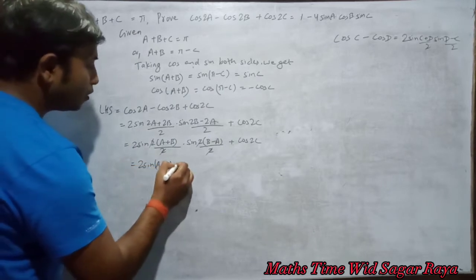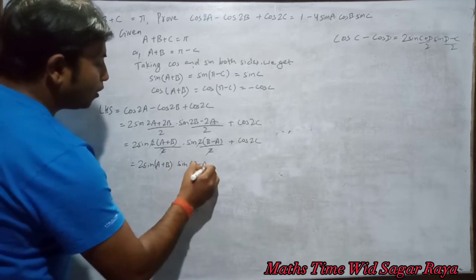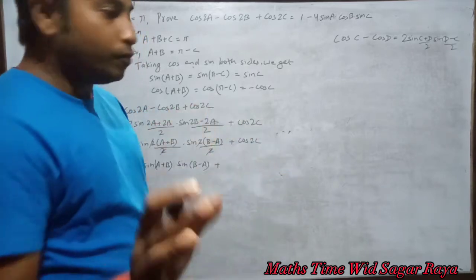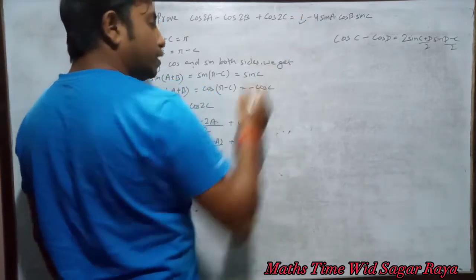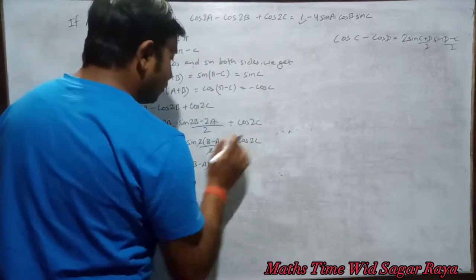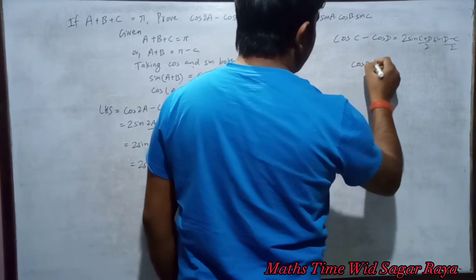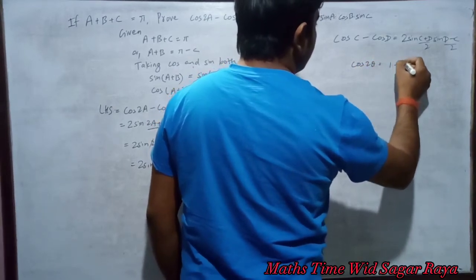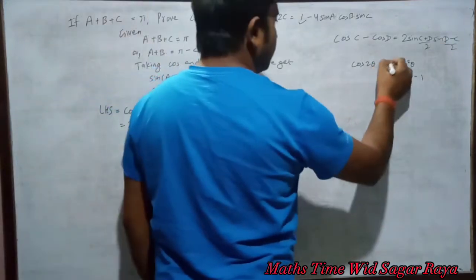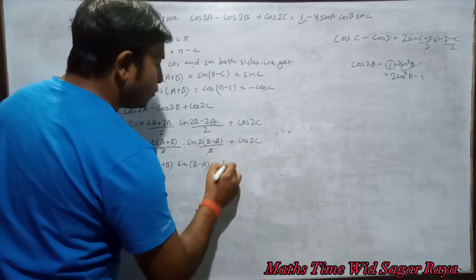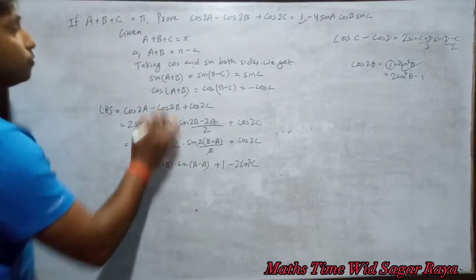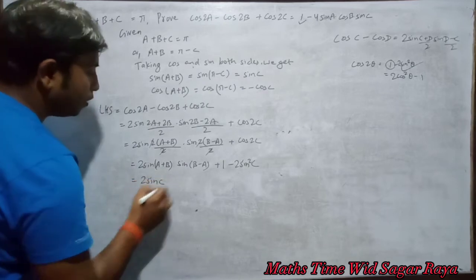Now we have 2 sin(A+B) · sin(B-A) plus cos 2C. Since we need a positive 1 in the RHS, we use the formula cos 2theta equals 1 minus 2 sin² theta. So cos 2C becomes 1 minus 2 sin² C. Also, sin(A+B) can be replaced by sin C.